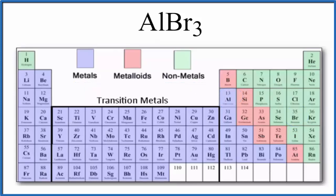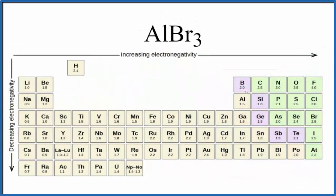We could also look at the difference in electronegativity between the aluminum and bromine atoms. So here's aluminum, 1.5, and bromine, 2.8. So 2.8 minus 1.5, that gives us 1.3. That's the difference in electronegativity between the aluminum and bromine bonds.